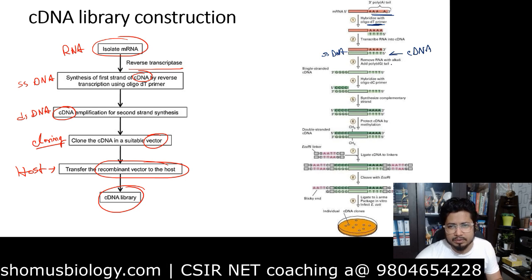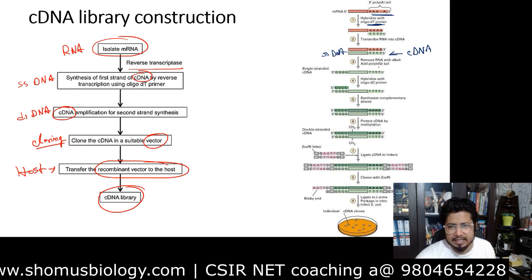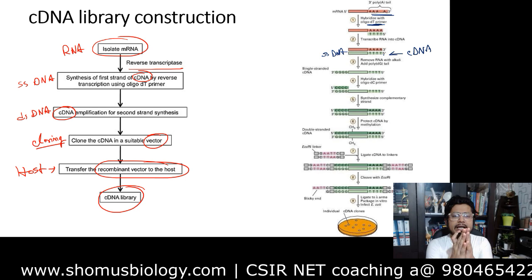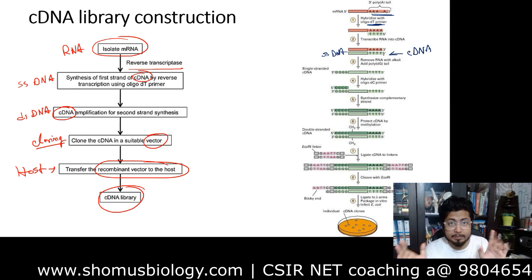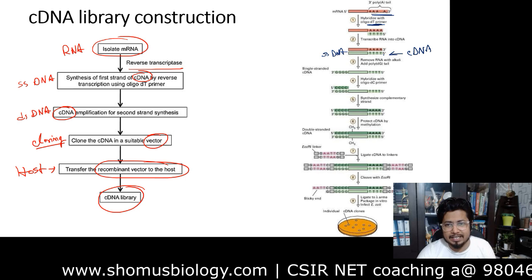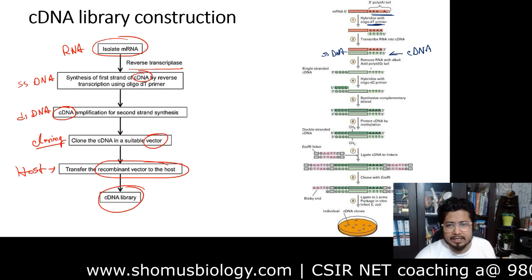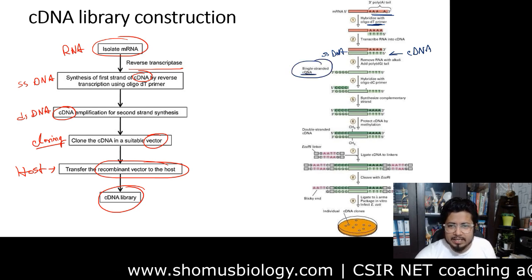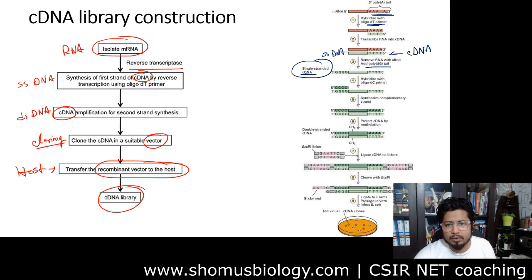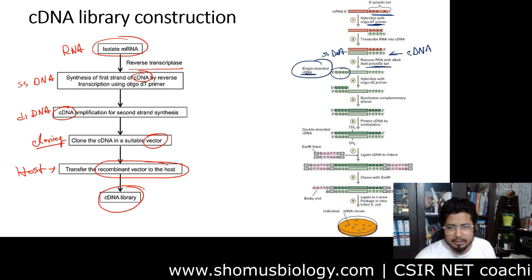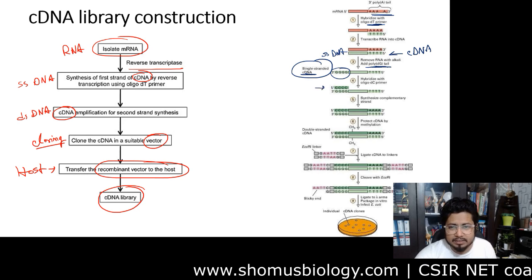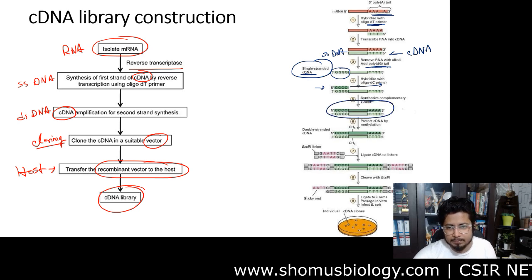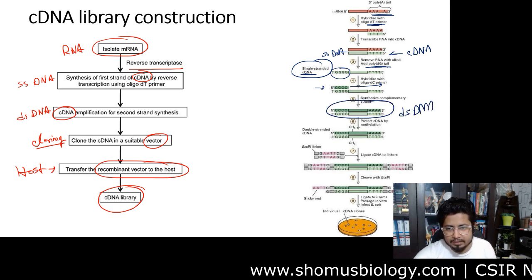Once single-stranded cDNA is made, the RNA is removed using alkali treatment. DNA-RNA hybrids can be easily separated with alkali treatment — this is an important point for competitive examinations. After separation, we have single-stranded cDNA. Then poly-G (oligo-G) is added to the end so that in the next round we can use oligo-dC to extend and make a double-stranded DNA.